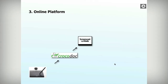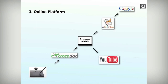I'd use Screencast-O-Matic instead of any other online option. I'd use it because there's no time limit, easy upload to YouTube, and there's a pro version for about five dollars a year that has editing and HD embedding. It's a really good option, and it's free. Throw that directly into YouTube, Google Docs, and my Google site.